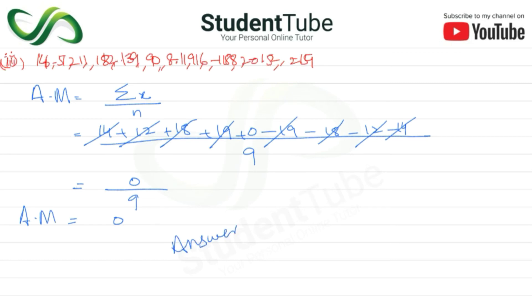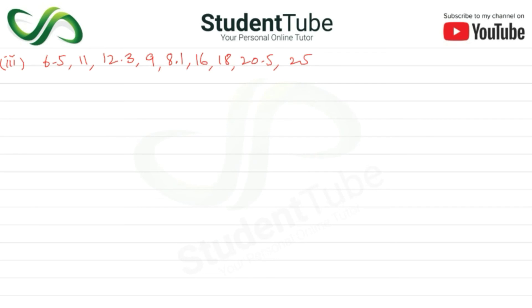Part 3 here. AM is equal to summation of x upon n. So 6.5 plus 11 plus 12.3 plus 9 plus 8.1 plus 16 plus 18 plus 20.5 plus 25. 1, 2, 3, 4, 5, 6, 7, 8, 9. Again 9 values, 9 observations total.